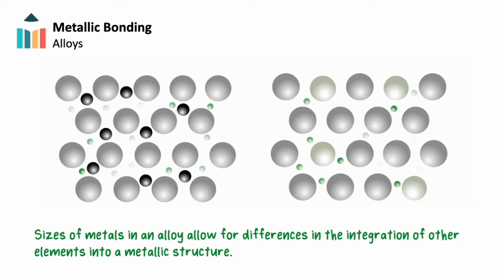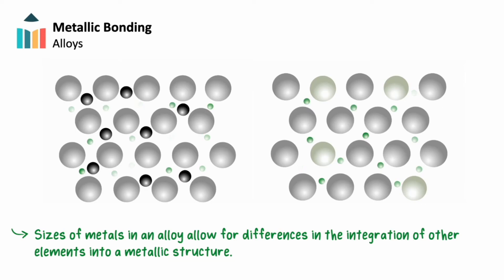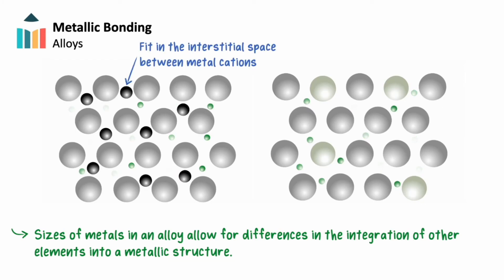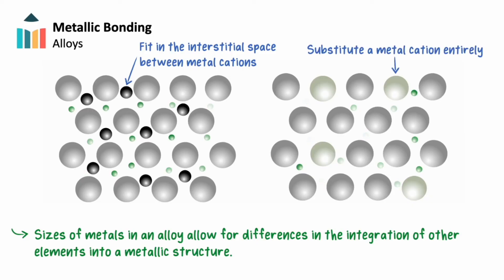The differences in the size of metals in an alloy allow for differences in the integration of other elements into the metallic structure. We see examples where other elements fit in the interstitial space between the metal cations in a lattice. This happens in steel, where carbon atoms fill the interstitial space between iron cations. In contrast, when the size of two metals are similar, we see situations where metal ions substitute for the metal cations originally in a structure, as happens in nichrome, where cations of chromium substitute in place for nickel throughout the structure.